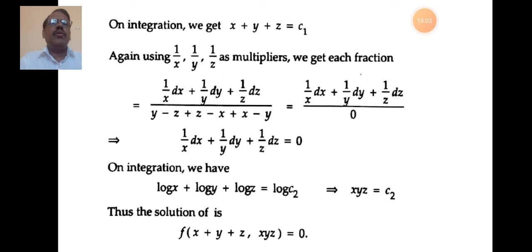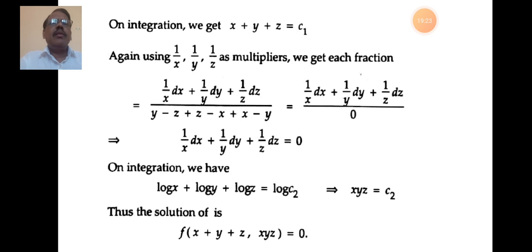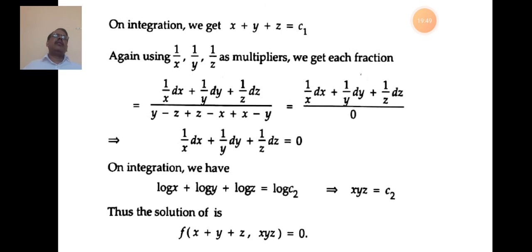For the second solution, use multipliers 1/x, 1/y, and 1/z. The combined ratio becomes (dx/x + dy/y + dz/z) / [(y−z) + (z−x) + (x−y)]. The denominator simplifies to y − z + z − x + x − y = 0, so all terms cancel again.